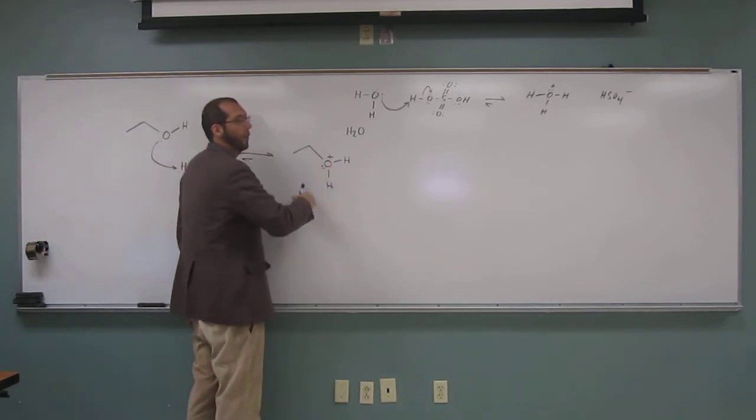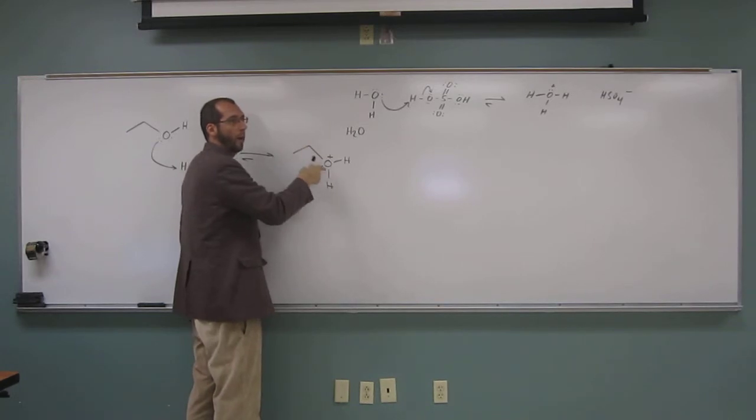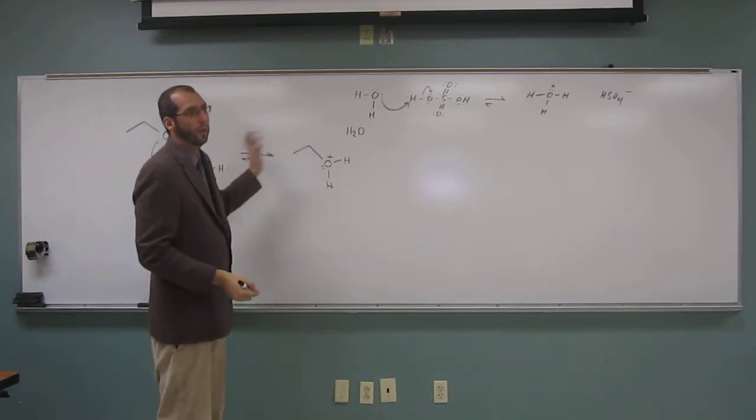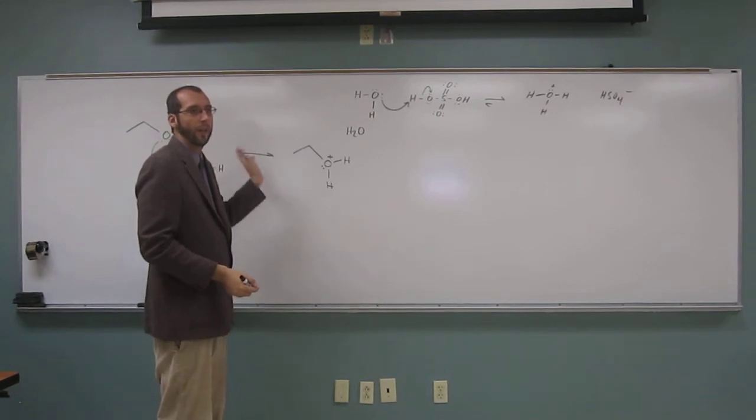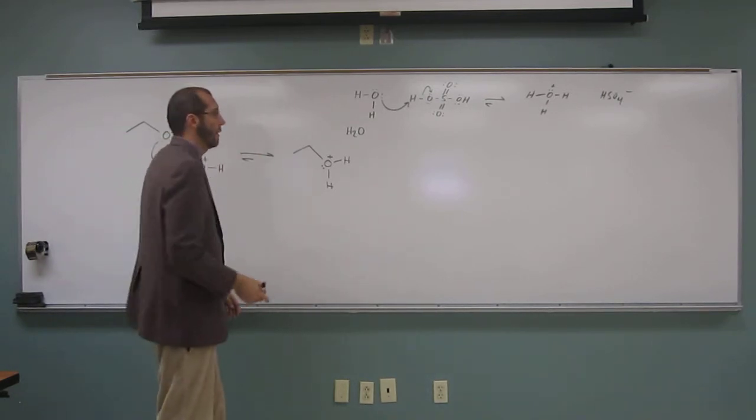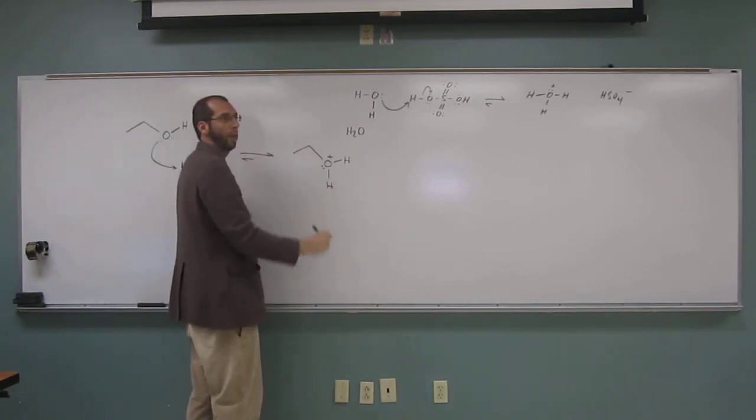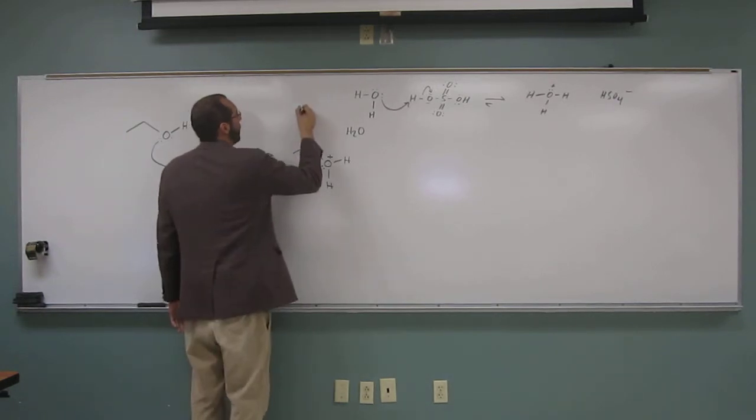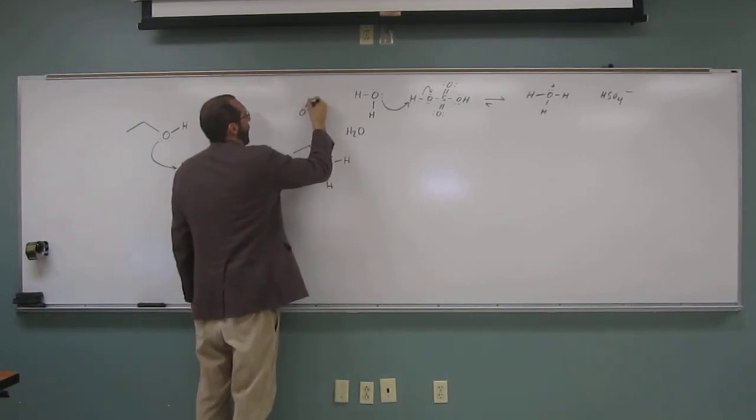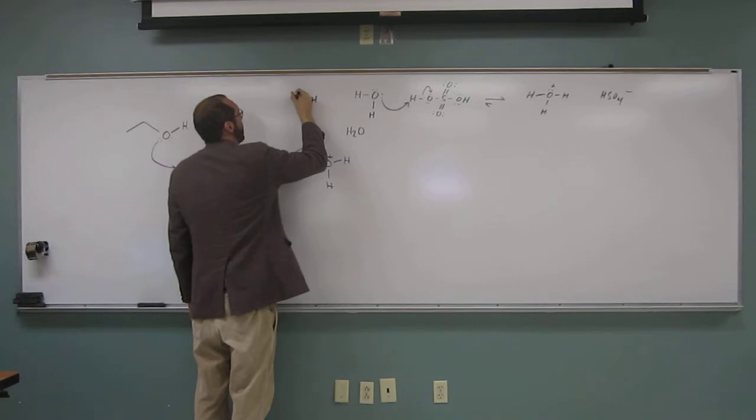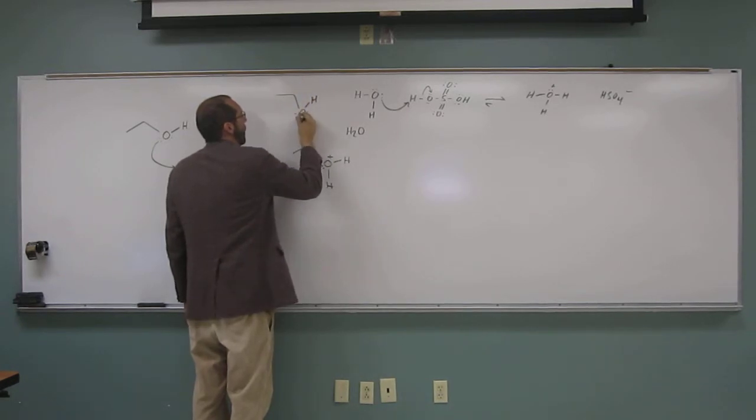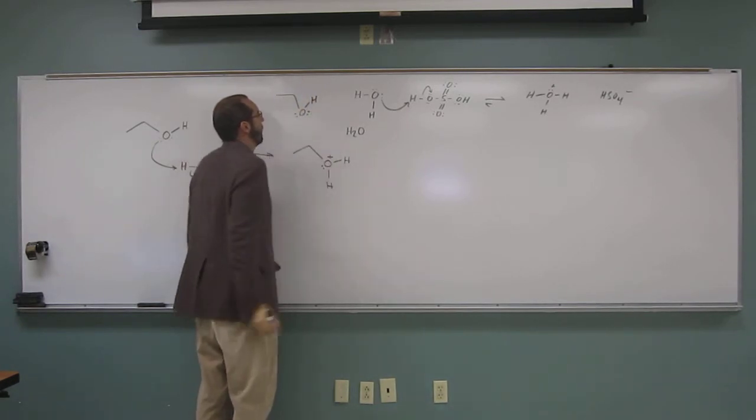so we've got our oxonium ion here. That's going to, the oxygen's attached to a primary carbon. So we've got another ethanol molecule going to react with this thing. It's going to be an SN2 reaction. Okay? Because that water is not going to leave by itself. Because of course you would have to then make the primary carbocation, which is unstable.